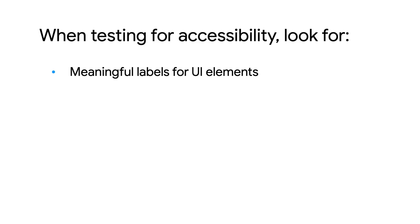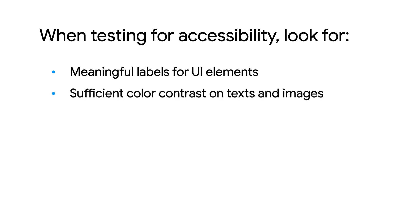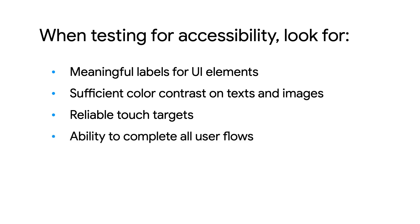Do all buttons and images have a meaningful label? Do all text and images have sufficient color contrast in both light and dark mode? Do all interactable UI elements have an adequate touch target size? And can a user complete all their user flows in the app using an accessibility service such as TalkBack?